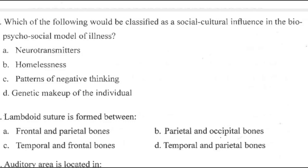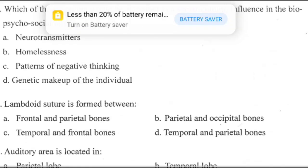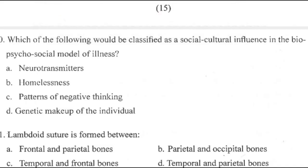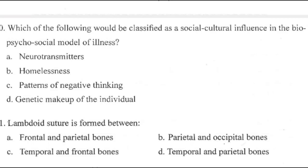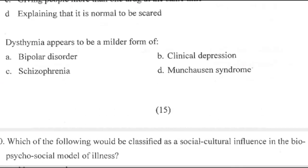Question 100: Which of the following would be classified as a socio-cultural influence in the biopsychosocial model of illness? Right answer is B. Question 99: Dysthymia appears to be a milder form of what? Right answer is B — clinical depression.